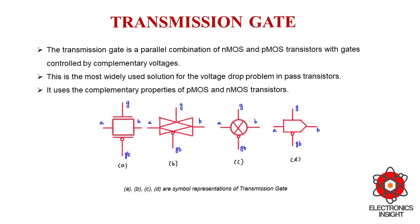By combining NMOS and PMOS transistors in parallel we get a perfect one and zero at the output without any degradation. This threshold voltage degradation, also called the voltage drop problem, was the most common problem in pass transistor design. Although we have seen efficient pass transistor design with a level-restoring circuit, this transmission gate is a very simple solution — rather than having a PMOS pass transistor in the feedback of an NMOS pass transistor for the level-restoring circuit.